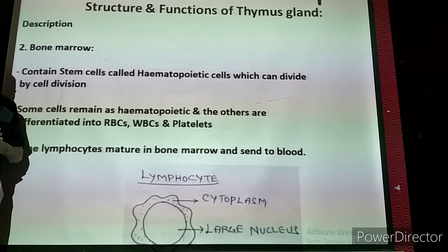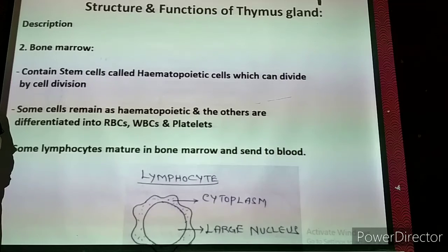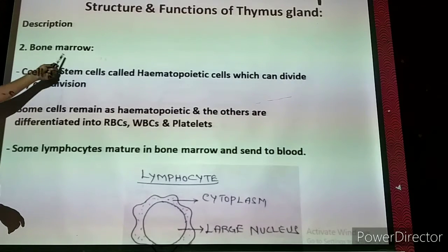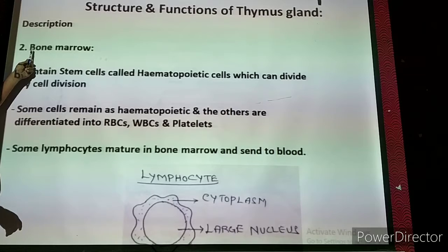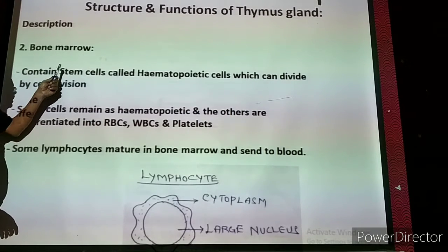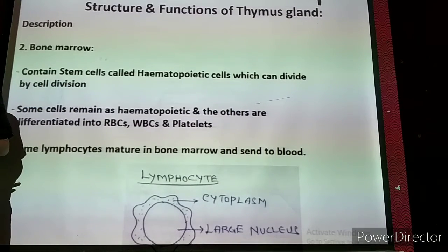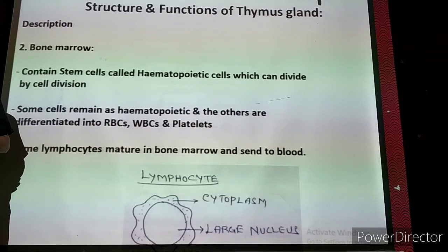The bone marrow is playing an important role in the production of blood cells. The bone marrow contains stem cells. We have to know what is the meaning of stem cells.